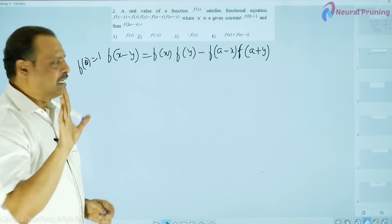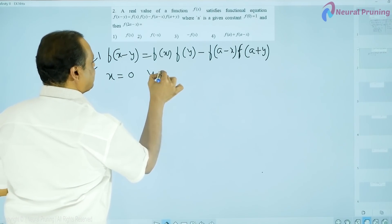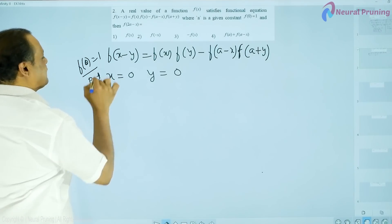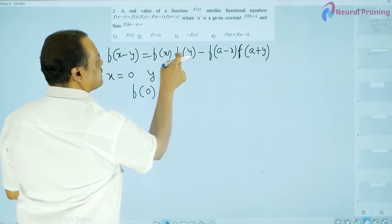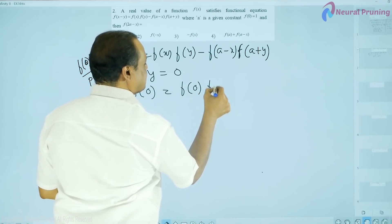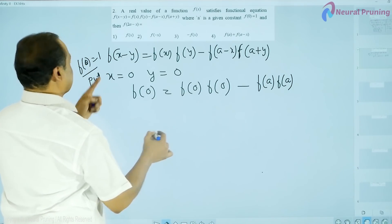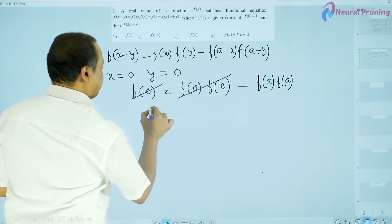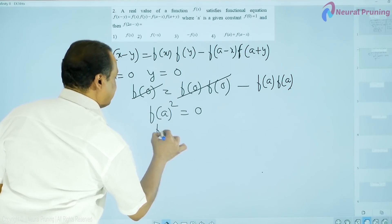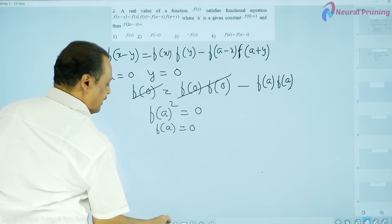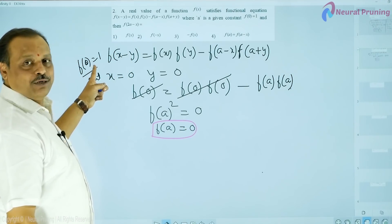Let us discuss two different methods. In the first method, substitute x = 0 and y = 0 into the equation. On the left side we get f(0). On the right side, f(0)·f(0) - f(a)·f(a). Since f(0) = 1, the f(0)·f(0) term equals 1 and cancels, giving -f(a)² = 0, so f(a) = 0.